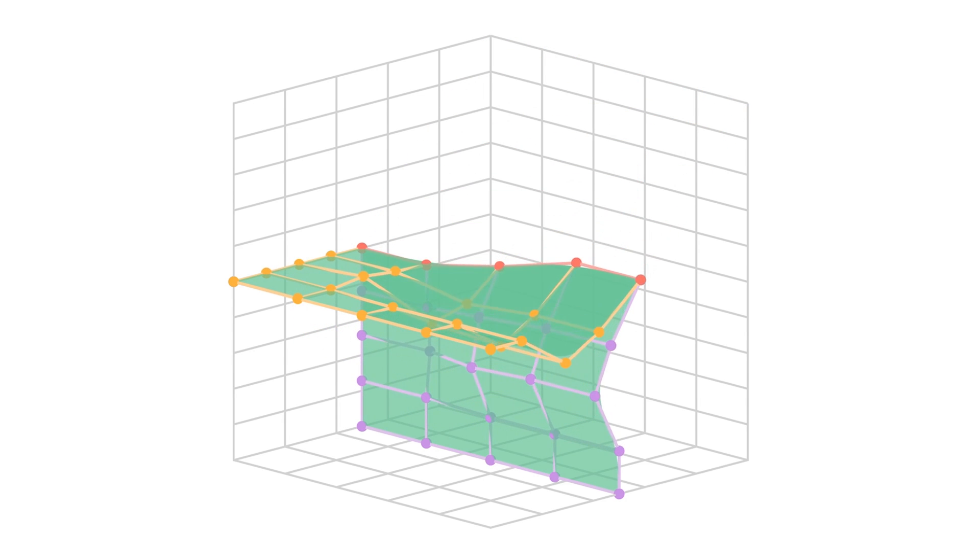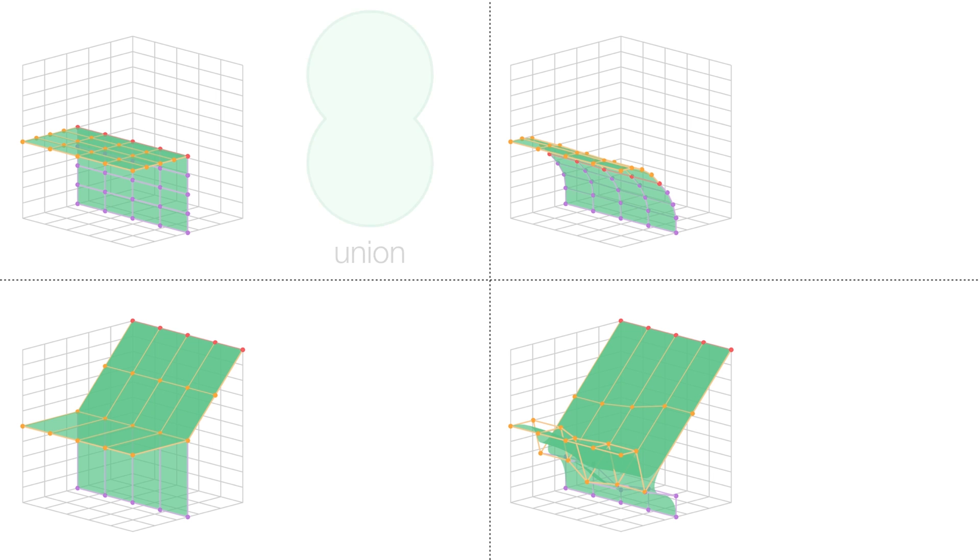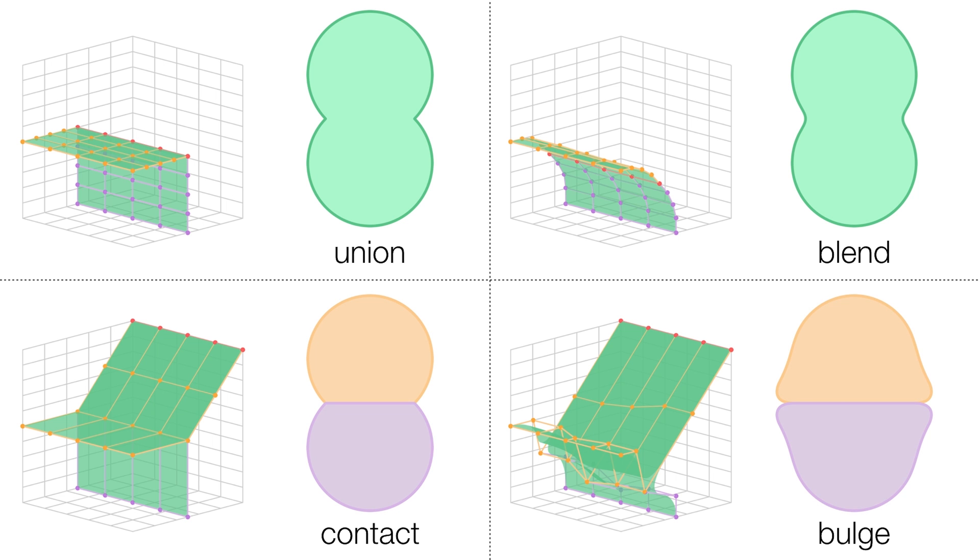The initial surface is a template for all the operators, which is then optimized to account for the sample data. This surface determines the behavior of the operator, which is able to produce any effect or combination, such as a union, blend, contact or bulge.